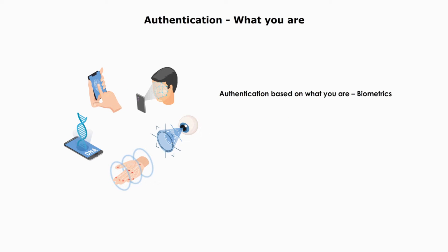What you are — biometrics. The third authentication factor is based on what you are: biometrics. Biometric authentication is considered one of the most effective ways of identification and authentication. It is based on physical traits such as fingerprints, facial features, retina iris, hand geometry, or DNA. This type of authentication is becoming more common in daily life — Touch ID, Face ID, fingerprints, and facial scanning are some biometric examples we may use on smartphones.